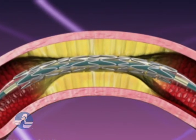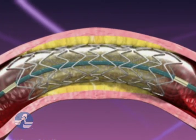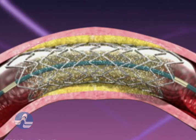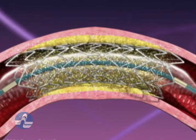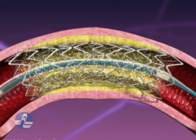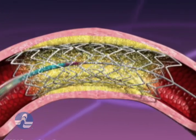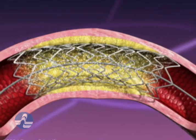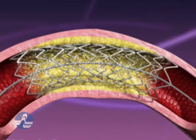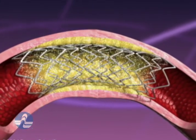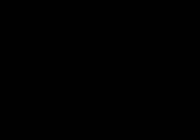A stent is just a flexible metal tube that fits into the artery, sort of like a mesh, and it is placed there permanently to hold the artery open.